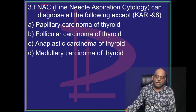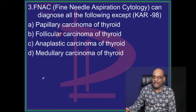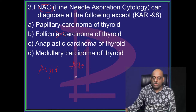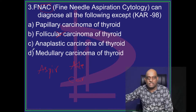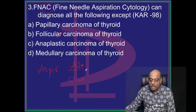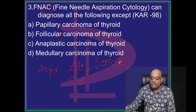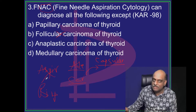FNAC cannot diagnose follicular carcinoma. Because with FNAC you are only aspirating — whether it is adenoma or carcinoma, what you get is follicular cells only. So how do you say whether it is follicular adenoma or carcinoma? You have to see whether the capsule is invaded or not. Capsular invasion can only be seen in biopsy, not in aspiration.